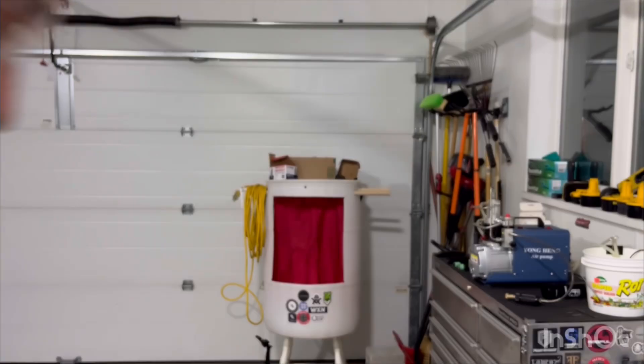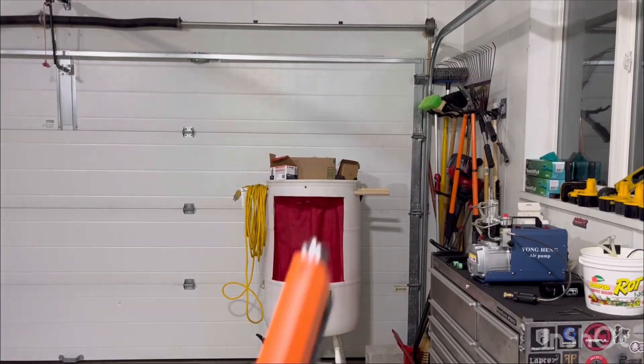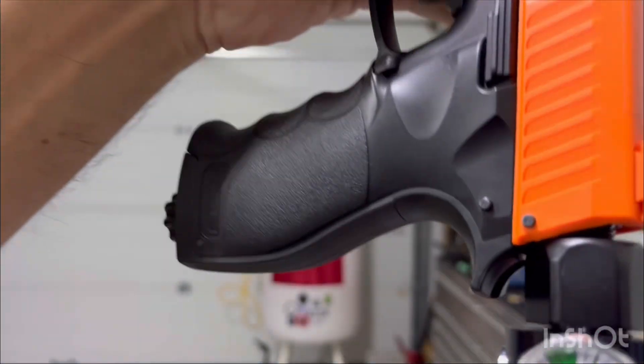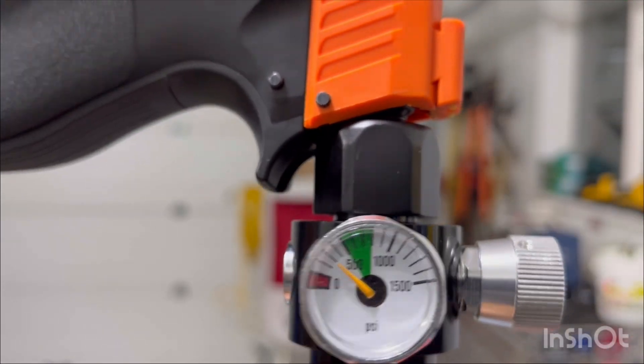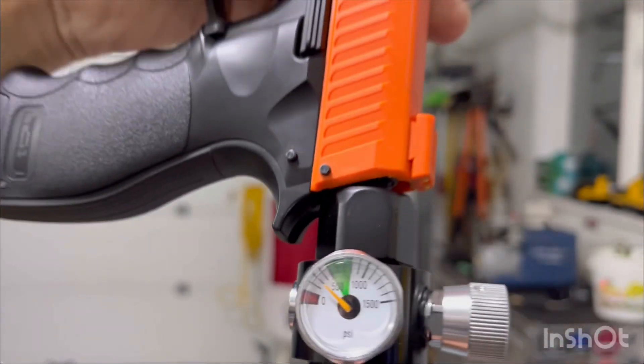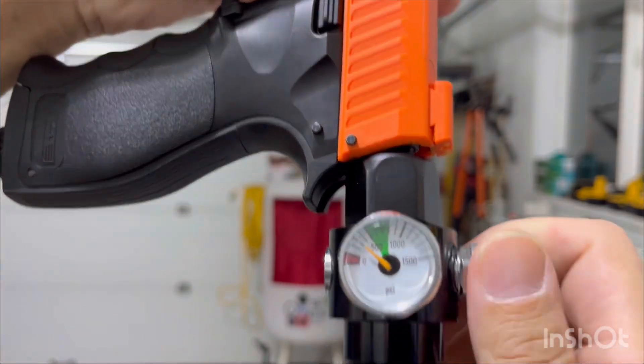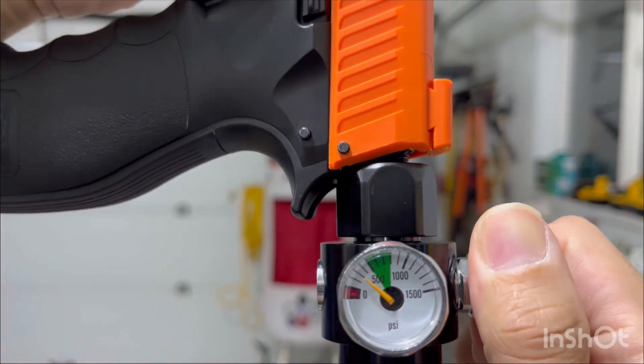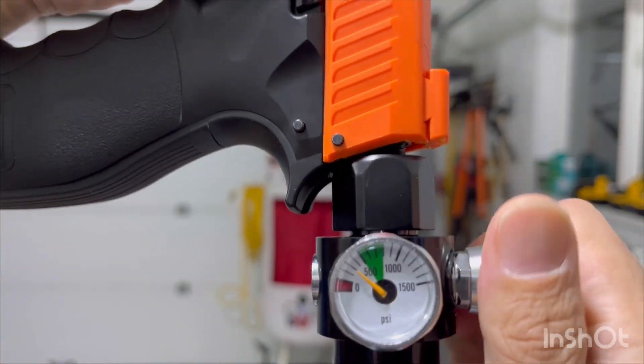182. What does it say? 200. Let's go to 500. 500 is green, that must be good, right?